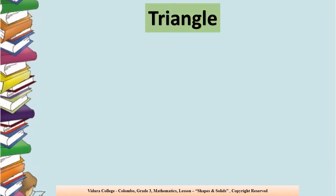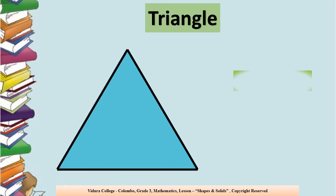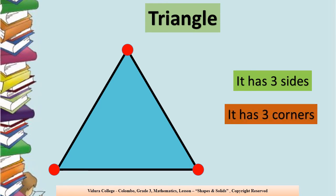Look at this shape. What is the name of the shape? It's a triangle. How many sides are there in the triangle? There are three sides. Let's count together: one, two, three. How many sides? There are three sides. And how many corners are there? There are three corners. Let's count: one, two, three. So we can say it has three sides and three corners.